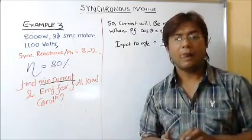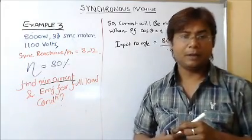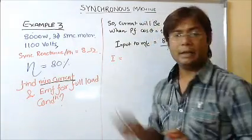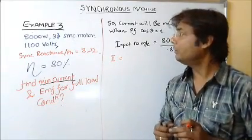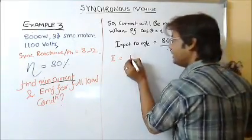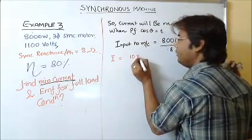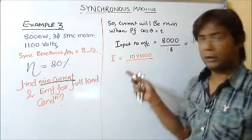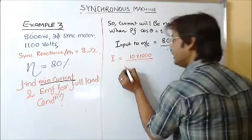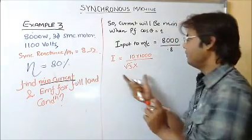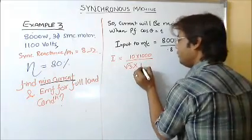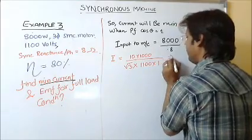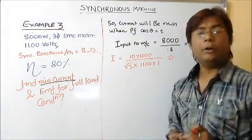From that input, I can find the current. The input is 10 kW and the voltage is 1100 volts. For a 3-phase motor, the current I equals 10,000 divided by (√3 × 1100 × cos φ), and since cos φ = 1, the minimum current works out to 5.25 amperes.